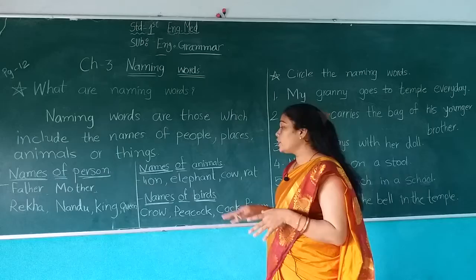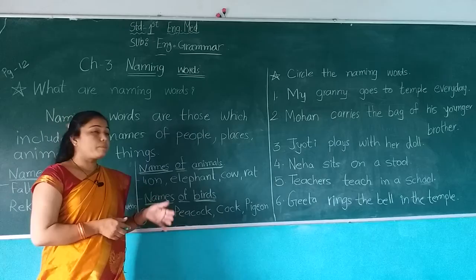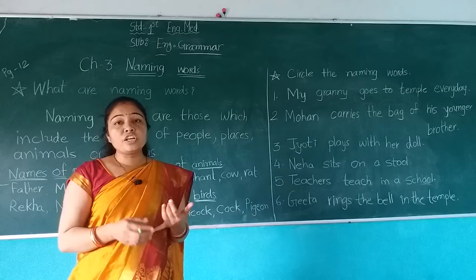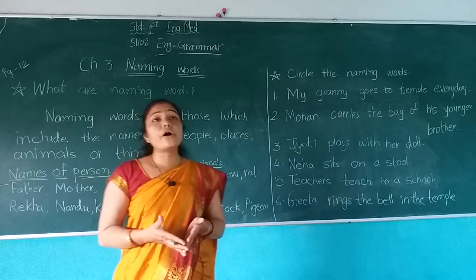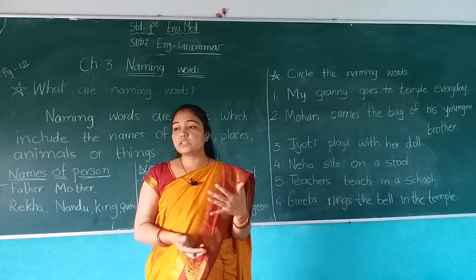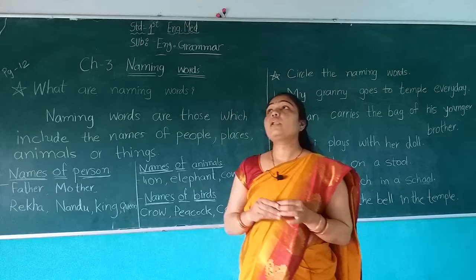Name of birds — we have seen many different types of birds: crow, peacock, pigeon — all include in the name of a bird. Then name of vegetables — we have eaten many vegetables: lady's finger, cucumber, potato, tomato, bottle gourd — everything includes in the name of vegetables. Then names of fruits: apple, orange, pomegranate, papaya — all include in the name of a fruit. Then name of things: chalk, table, fan, bag — everything includes in the name of things.